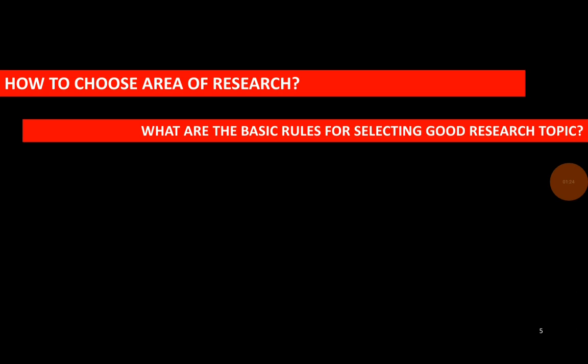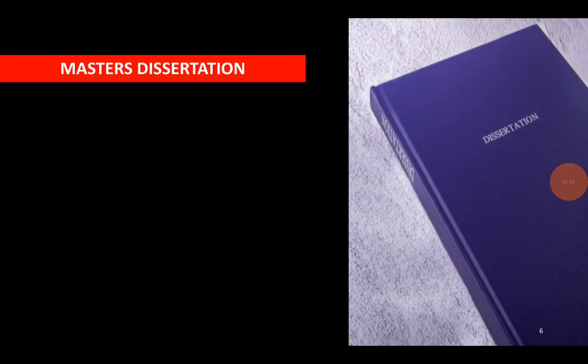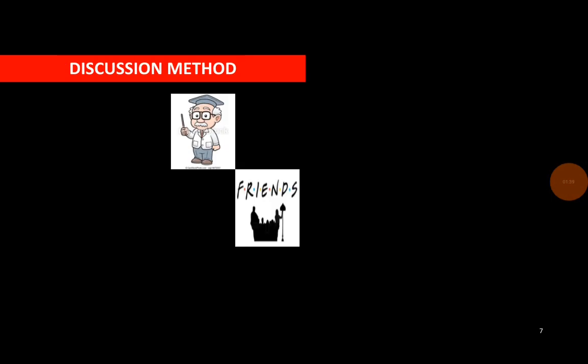Here are the points. Step one: one can choose their master's project or dissertation, definitely after some modifications. Step two: have frequent discussions with your teachers, friends, and other research scholars who may guide you to choose your topic.